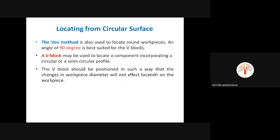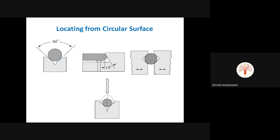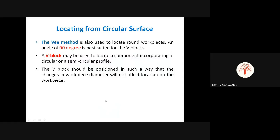Another method for locating from circular surfaces is using a V-Block, which you may have seen in your lab. The V-method is used to locate round components, and an angle of 90 degrees is best suited for the V-Block. A cylindrical job is placed in the V-Block. For example, if we need to drill a hole at the middle of a cylinder, we place it in the V-Block. The V-Block should be positioned so that changes in workpiece diameter will not affect the locating of the workpiece.